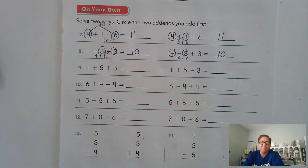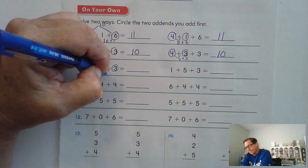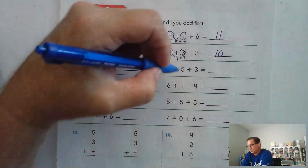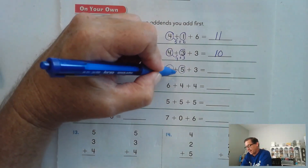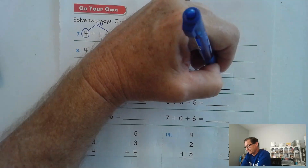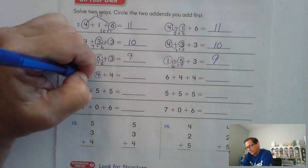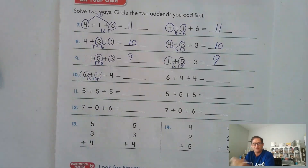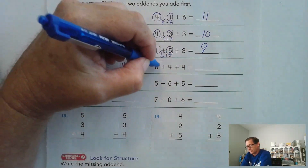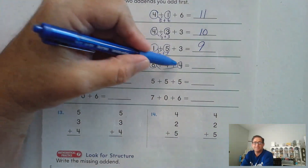One plus five plus three. Maybe I'll combine the five and the three — that makes eight, and one plus eight is just nine. Or one plus five is six, and six plus three: six, seven, eight, nine. Six plus four plus four: I see that six and four makes a ten. I can also combine the first six and the second four.